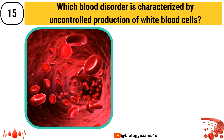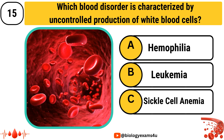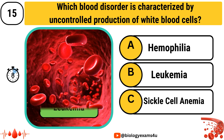The next question: Which blood disorder is characterized by uncontrolled production of white blood cells? Option A: Hemophilia, Option B: Leukemia, Option C: Sickle cell anemia. The answer is Leukemia.